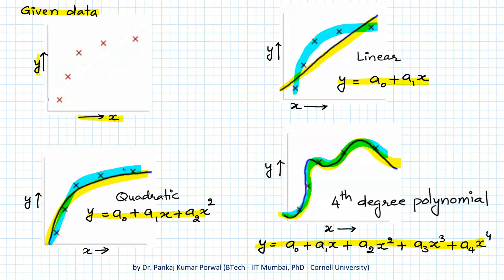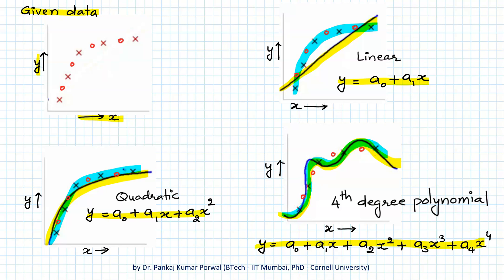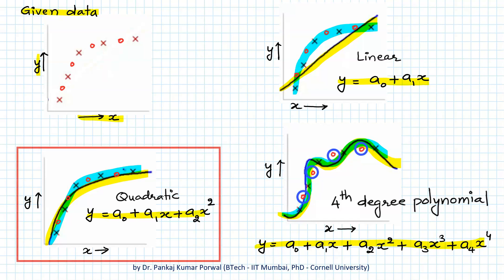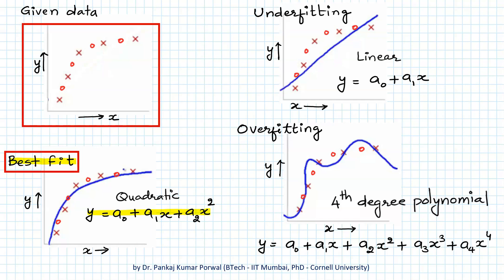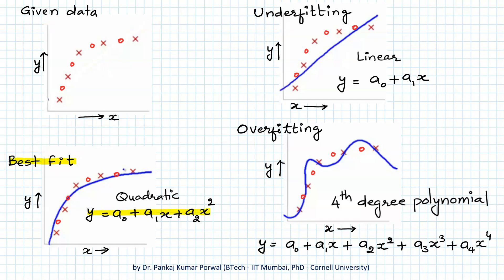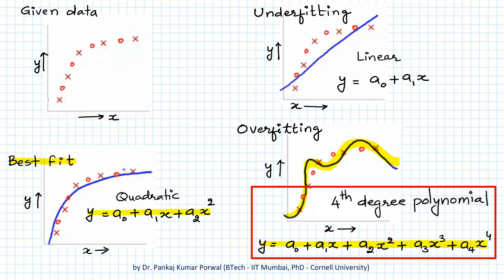However, we want low error not just for training data but also for new unseen data, and the fourth degree polynomial is not doing a good job at that. It seems to have memorized the training data, so it performs well for training data but poorly for new unseen data. The quadratic polynomial gives the best result for both training data and new unseen data, making it the best fit — its complexity matches the complexity inherent in the data.